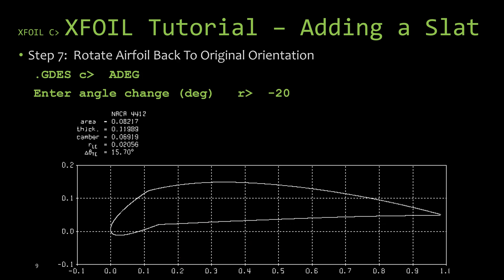Now this is the extra step that can be included to hack the flap command to do a slat. Essentially what happened is that instead of deflecting the slat downwards, we deflected the rest of the airfoil downward as a flap. And in this step, we're going to rotate it back around so that the airfoil is back at a zero degree angle of attack and the slat is actually deflected downwards.